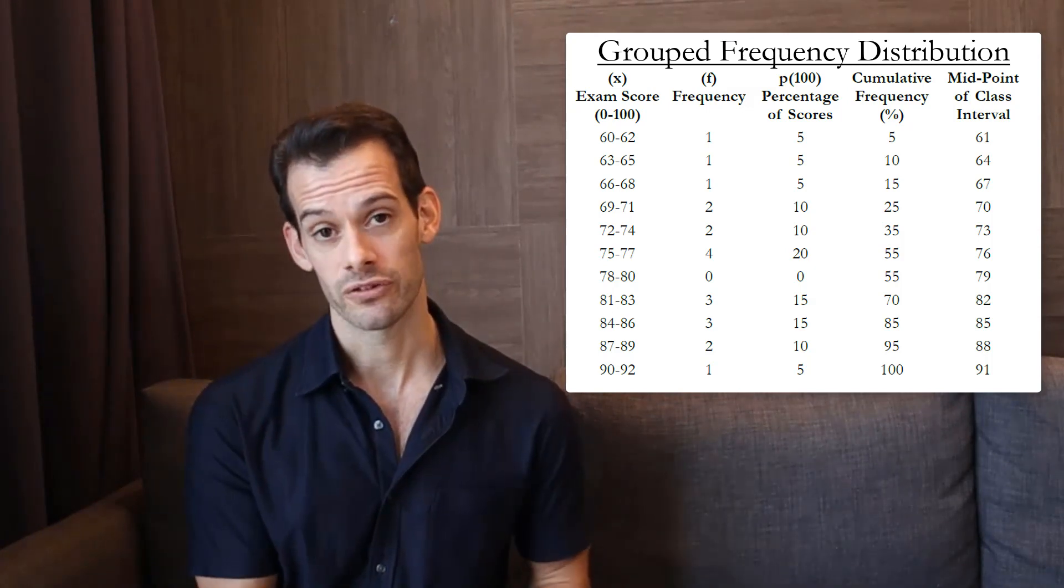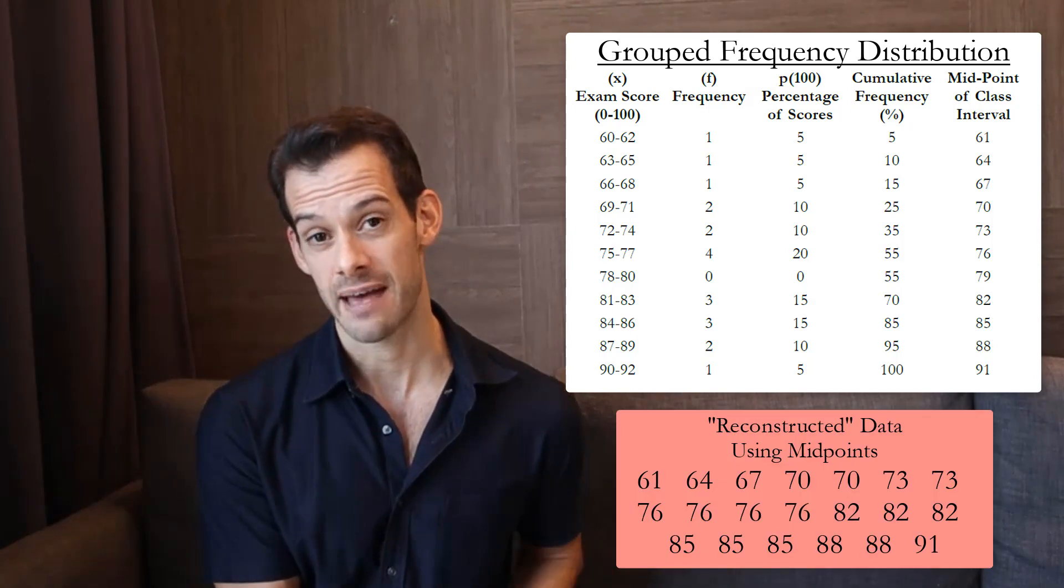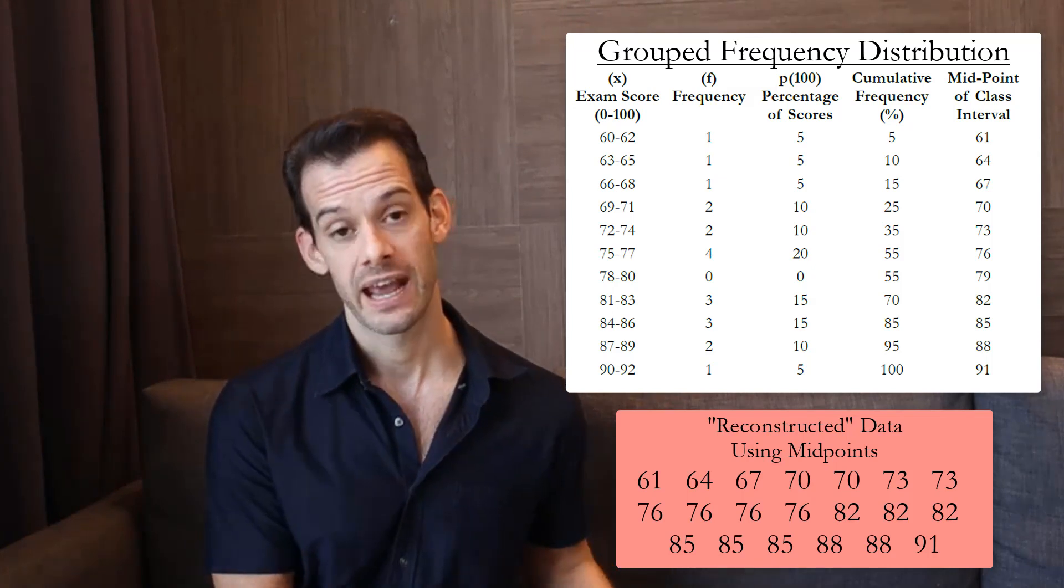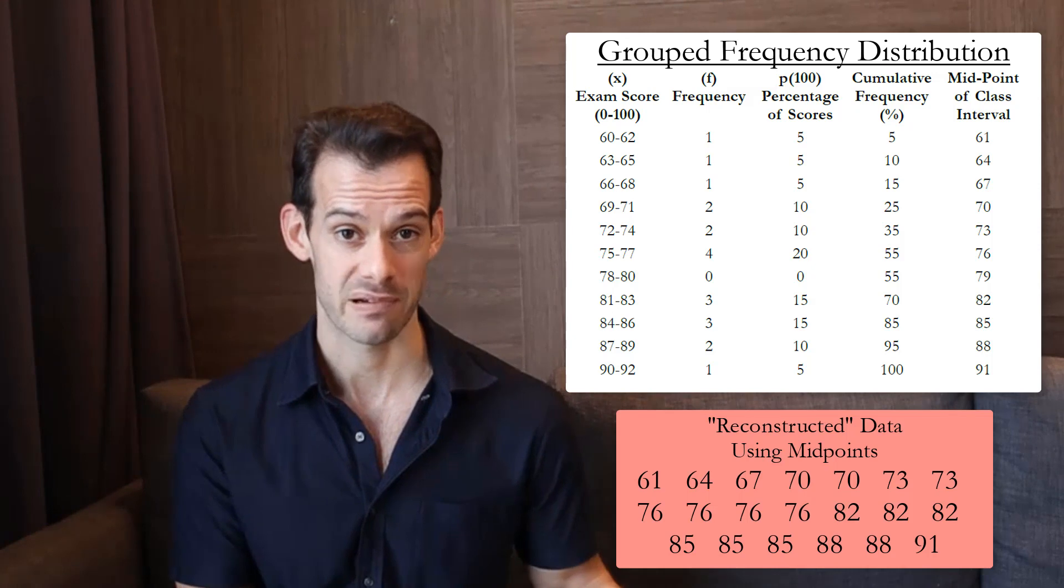Using the midpoint for the class intervals allows us to estimate the scores and sort of reconstruct what the data set might have looked like. But it won't be exactly the same as the actual raw data. And as the class interval gets larger and larger, this estimate will get less and less precise.